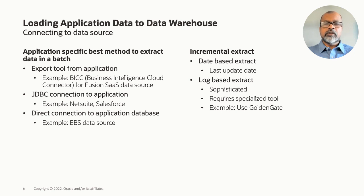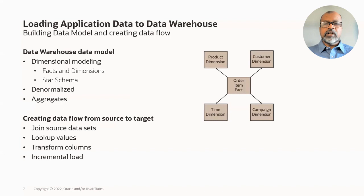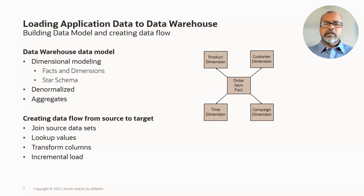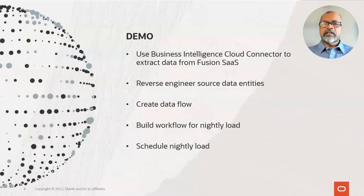After data extract, one has to transform the data and load it into the target data model. Data warehouses generally use a dimensional model — facts and dimensions in a star schema. Data is also denormalized and aggregated as necessary. Transformations in the data flow can be quite complex, involving joins, lookups, and strategies to load incremental data. ODI Web Edition provides a rich selection of transformation tools in a simple drag-and-drop interface. In the demo, we'll connect to Fusion SaaS using BICC, reverse engineer the entities, and build a workflow to schedule the data warehouse load.